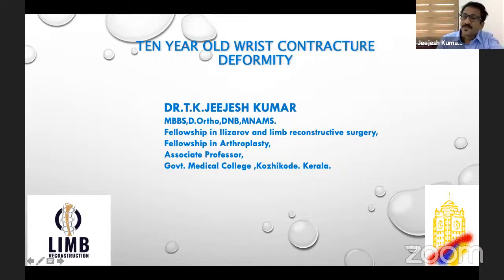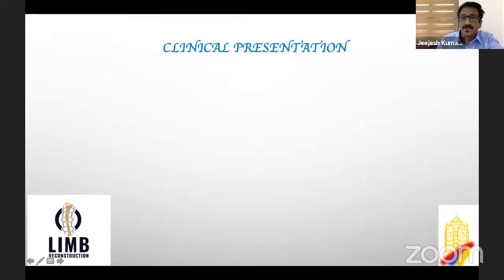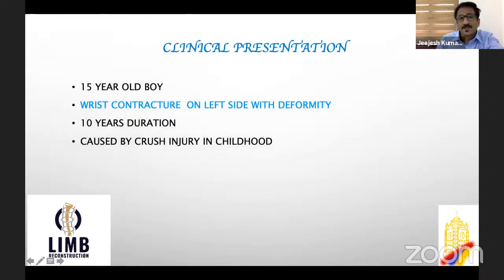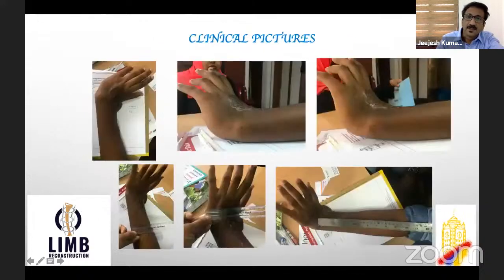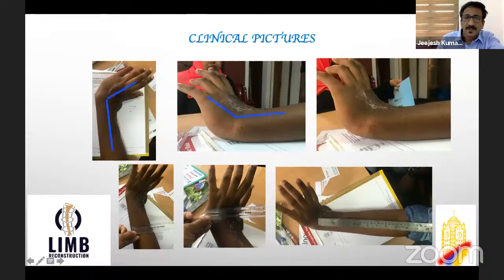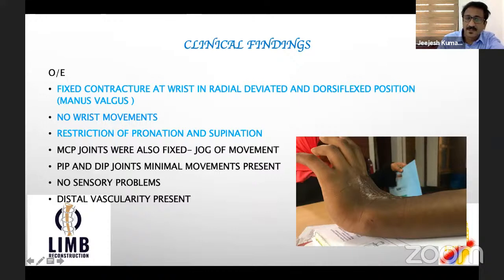I am going to present a case of wrist contracture deformity in a 15-year-old boy of 10-year duration. He had wrist contracture on the left side — a radial deviation and dorsiflexion deformity of 10-year duration following a crash injury during childhood. He had multiple surgeries including flap coverage by plastic surgery, and later developed the deformity which was also tried to be corrected but could not succeed.